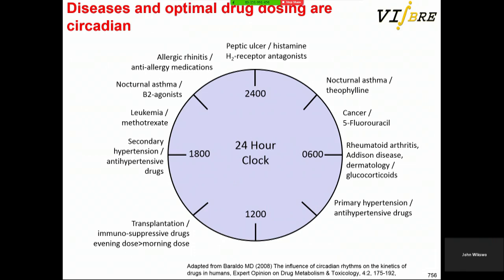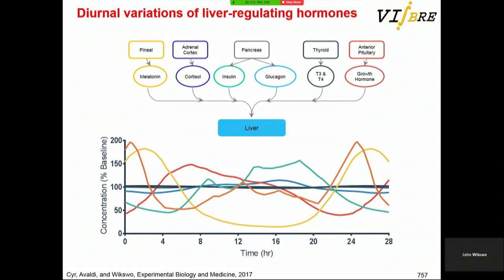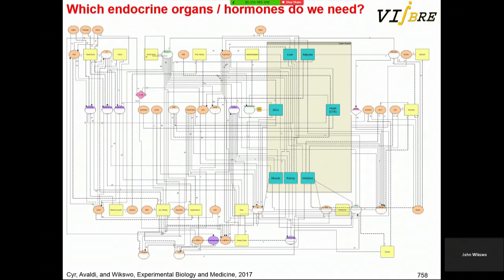Drug dosing and drug response are circadian. You don't want to take acetaminophen in the morning after a hangover because of diurnal susceptibility. Some of my students started working on hormonal modulation of organs on chips. In vivo, in the case of the liver, three endocrine organs have circadian modulation. We have, in press right now, a hormonal modulation and circadian modulation map of the seven organs in the coupled system we showed before.